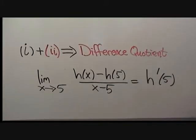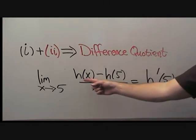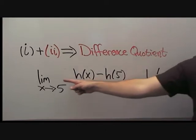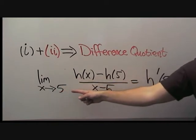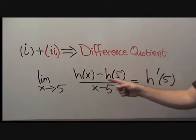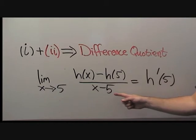When the first feature and the second feature take place together, you should think of the difference quotient. That means, for some function h, we're not sure what it will be, we're looking at the limit as x goes to 5 of h of x minus h of 5 divided by x minus 5.